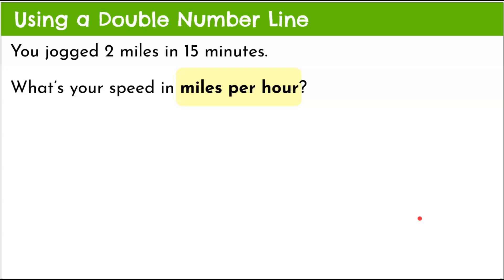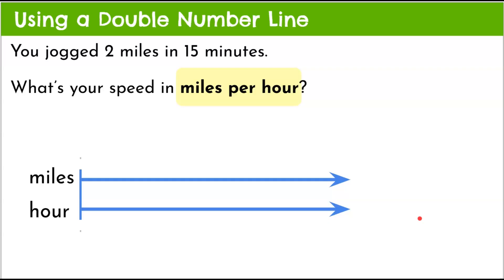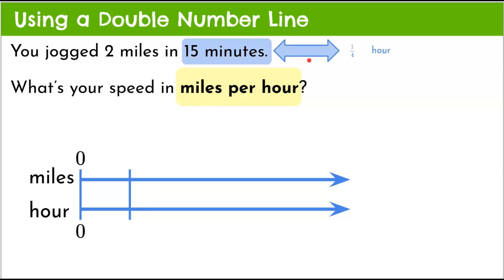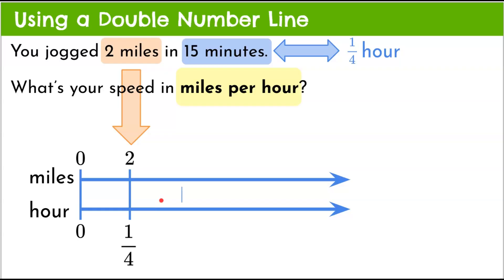Now let's model it using a double number line with the same real-world problem — jogging two miles in fifteen minutes, finding the unit rate in miles per hour. The double number line starts at zero, with miles on top and hour on the bottom. We need to section the bottom so it equals one. We know fifteen minutes is a fourth of an hour, so we mark one-fourth, then one-half (since one-fourth plus one-fourth is one-half), then three-fourths, and one.